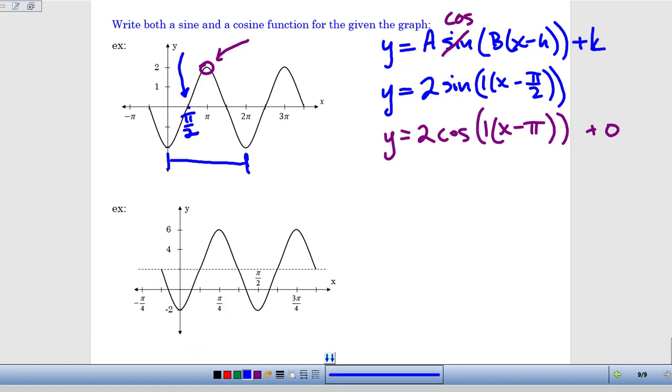We'll close things out with one more of the same type of question where we're trying to write the equation of a graph that's been provided for us. We've got to write both a sine and cosine function. For the sine graph, we'll use that as our starting point. We have to fill in our values for a, b, h, and k.